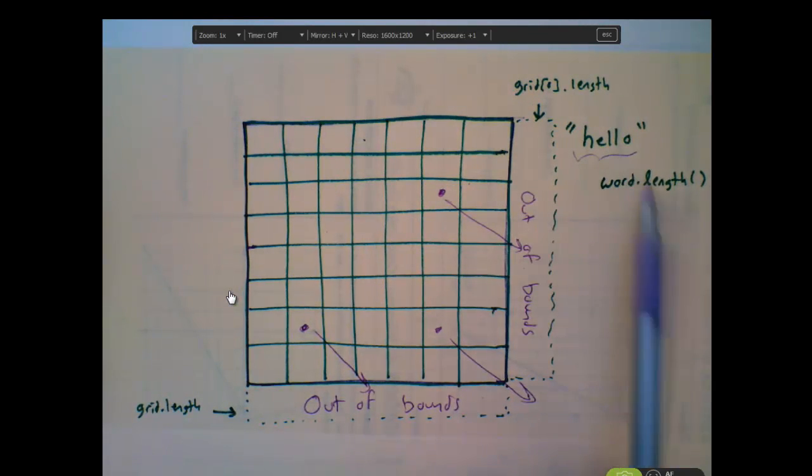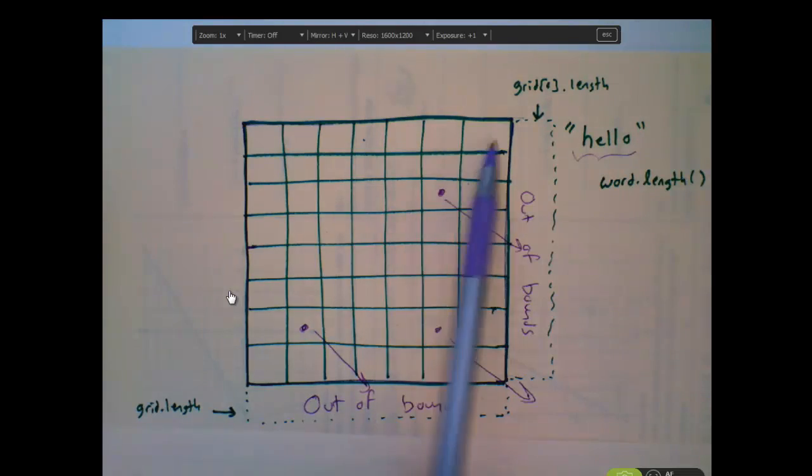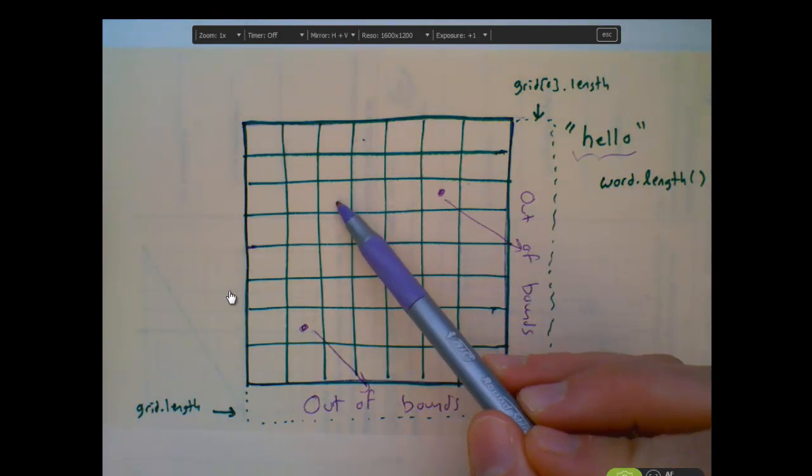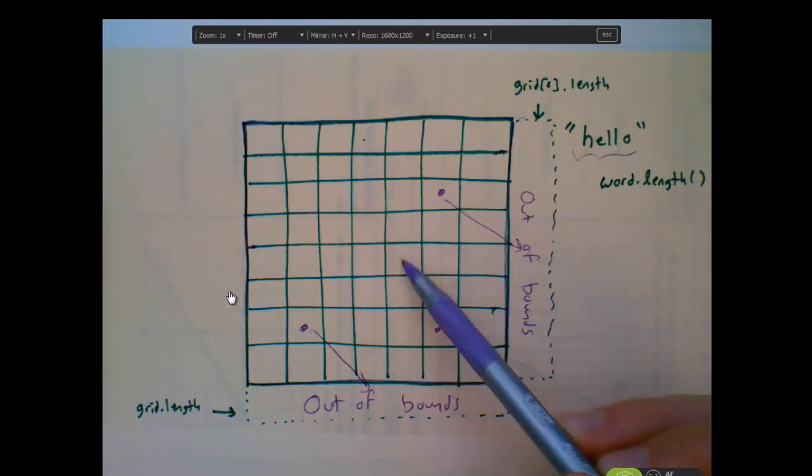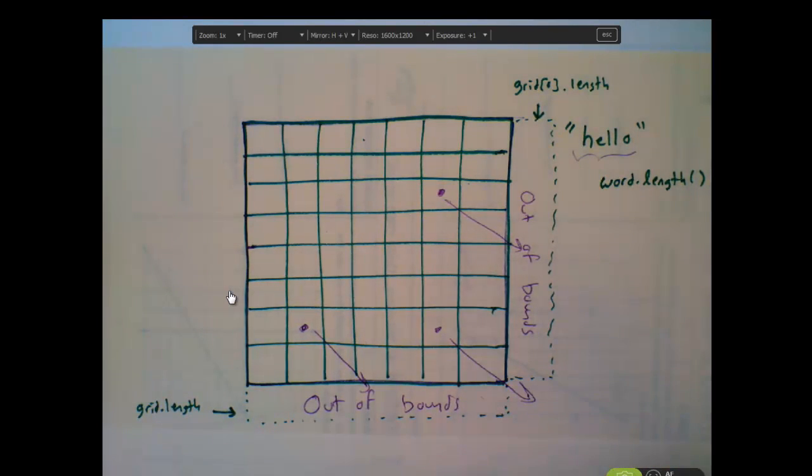Let's pretend I'm searching for the word hello. A good step-by-step process for this might be the way that you start many other problems. You could loop through every possible starting position, and for each of those starting positions, you could search diagonally down. You could say, is this H-E-L-L-O? And if the answer is yes, you've solved it. Otherwise, you just go on to the next starting position.